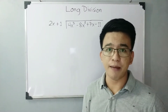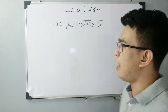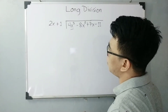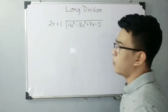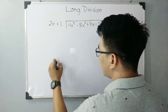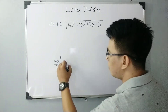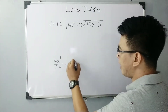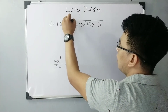So basically guys, what is the first step? In dividing polynomials using long division, the first thing we do is divide the first term of your dividend by the first term of your divisor. So, what is 4x cubed divided by 2x? We know that 4 divided by 2 is 2, and x cubed over x is x squared. So our quotient term is 2x squared.